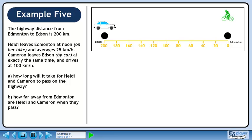Let's set up an animation where Cameron leaves Edson by car and Heidi leaves Edmonton on her bike. When we play the animation, we see that Heidi and Cameron pass when they are close to Edmonton. This makes sense since a car is much faster than a bike.